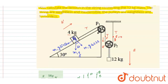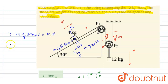In the upward direction, the normal reaction acts, which is equal in magnitude to the cosine component. Writing the force equation along the plane: T minus m1 g sin theta equals m1 a dash. m1 is 40, so m1 g is 40; sin 30 is one half, so I write T minus 40 times one half equals T minus 20.